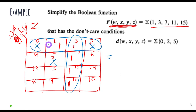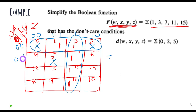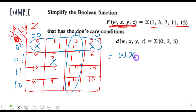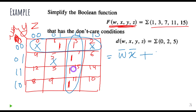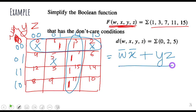Now I'll write the equation. For the first group, W and X stay the same throughout the entire group while Y and Z have changed — so I write W-bar X-bar, since W and X are both zero here. For the second group, all combinations of W and X have changed, but Y and Z stay the same at one-one — so I write YZ without a bar, since we write the bar for zero and no bar for one. The final output is W-bar X-bar plus YZ.